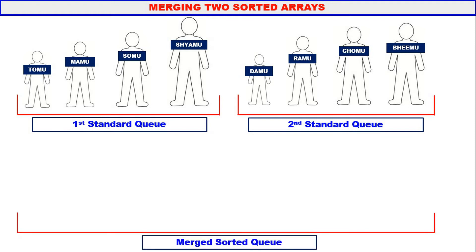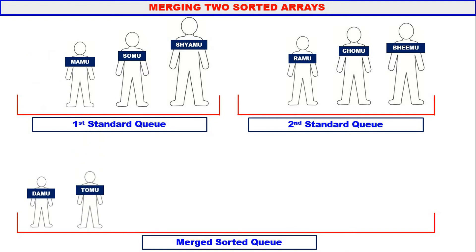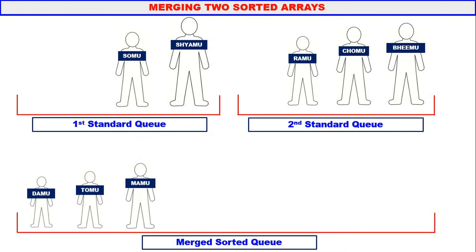Now our job is to merge these two queues. First, compare the height of the first student of first standard and first student of second standard — that is, compare the heights of Tomu and Damu. Damu is shorter, therefore Damu will come to the merged sorted queue. Now compare the heights of Tomu and Ramu. Tomu is shorter, therefore Tomu will come to the merged queue. Now compare Mamu and Ramu — Mamu is shorter, so Mamu will come to the merged sorted queue.